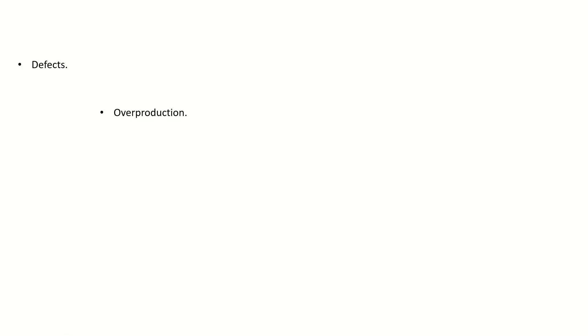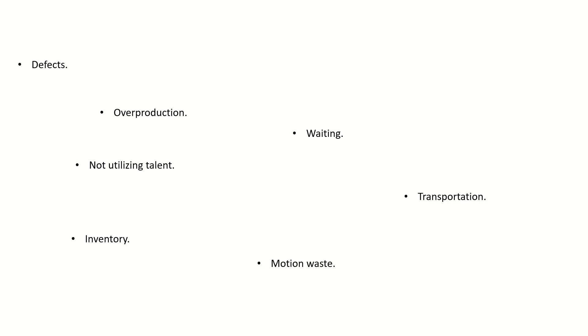Overall, there are eight types of waste which exist. Number one is defects, number two is overproduction, number three is waiting, number four is non-utilizing talent, number five is transportation, number six is inventory, number seven is motion waste, and number eight is extra processing. To remember these eight wastes, the acronym that is used is called DOWNTIME — D-O-W-N-T-I-M-E.